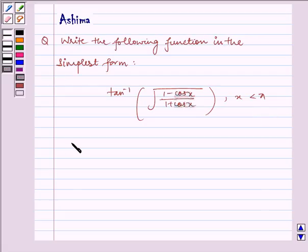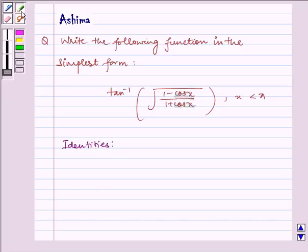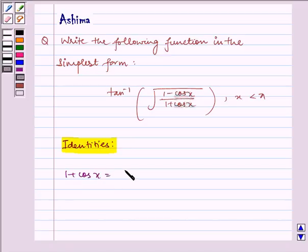Now in this question we will be using the following identities. 1 plus cos x is equal to 2 cos squared x by 2, and 1 minus cos x is equal to 2 sin squared x by 2. Let us name them as 1 and 2.